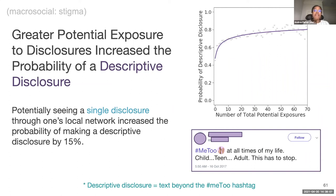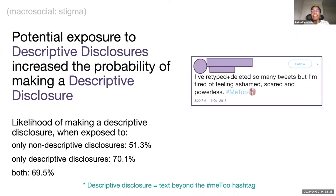We defined potential exposure to disclosures as the number of times there were disclosure tweets by people that a user is following. We found that greater potential exposure to disclosures increased the probability of someone making a descriptive disclosure — the more disclosure tweets shared by people a user follows, the more likely that user would share a descriptive disclosure themselves. This effect happened most strongly when Twitter users went from not following anyone who tweeted a disclosure to having just a single person they follow tweet a disclosure. Descriptive disclosures beget descriptive disclosures — people's likelihood of making a descriptive disclosure increased when people they follow also made descriptive disclosures.